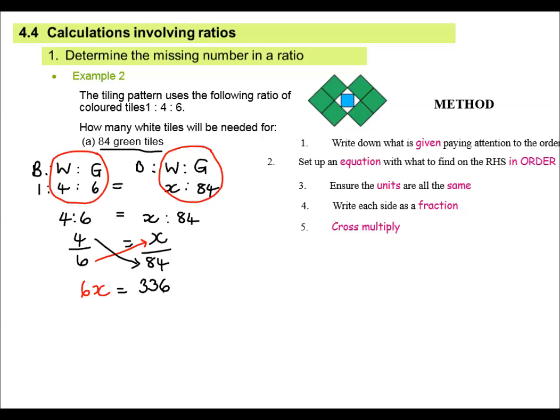The next step is simplify if necessary. So in other words, you have to get x on its own. So I've got to get rid of the 6. So what I'm going to do to get rid of the 6, we divide by 6. What you do to the one side, you do to the other side. So x equals 336 divided by 6 will give you 56. Always go back to your question and answer the question. 56 is what? Well, I need 56 white tiles.